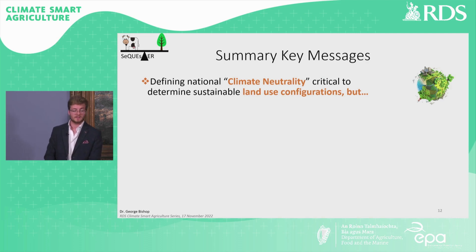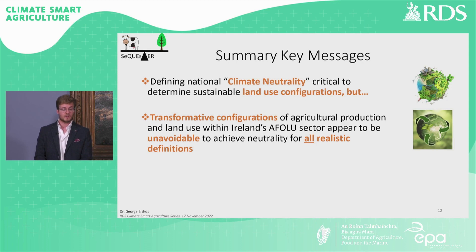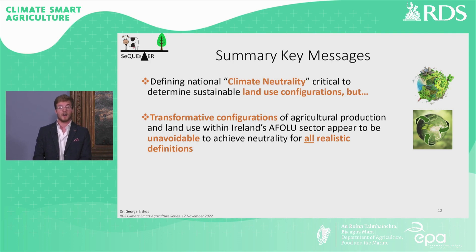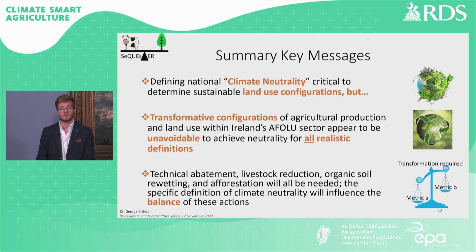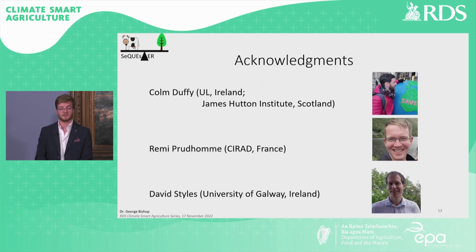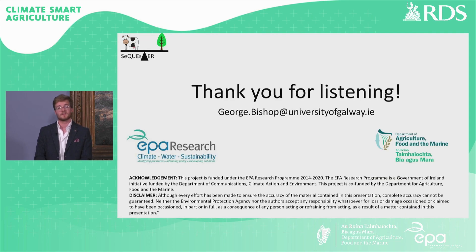This study has shown that defining national climate neutrality is critical to determine sustainable land use configurations. Transformative configurations of agricultural production and land use within Ireland's agricultural sector appear to be unavoidable to achieve neutrality for all realistic definitions. Technical abatement, livestock production changes, organic soil rewetting and afforestation will all be needed, and the specific definition of climate neutrality will influence the balance of these actions. I'd like to thank Colm, Remy and David for their work in this study. Thank you very much for listening.